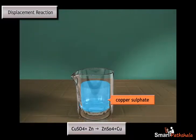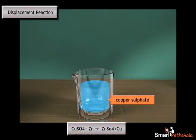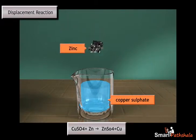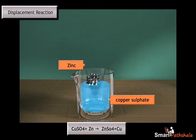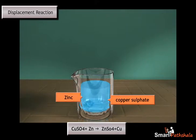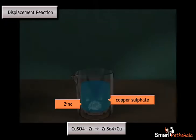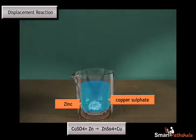For example, let us take a beaker and add copper sulphate, which is blue in colour, and add zinc granules in it. After some time, you can find the formation of zinc sulphate, which is colourless, as the zinc displaces the copper from copper sulphate. A red colour copper precipitate is formed at the bottom of the beaker.